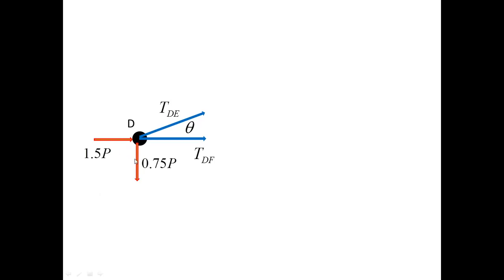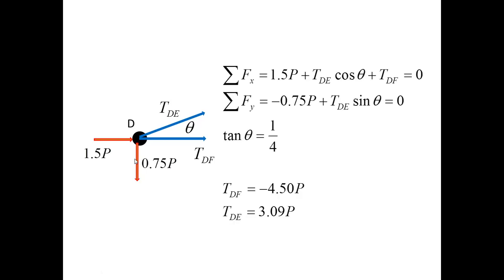The forces at D determined from the previous free body diagram are now shown in red as known quantities. With two equilibrium equations for two unknowns, and noting that the angle theta satisfies tan(θ) = 1/4, these equilibrium equations yield the two remaining unknowns.